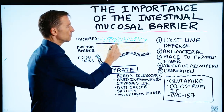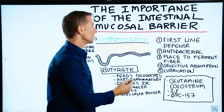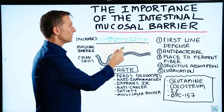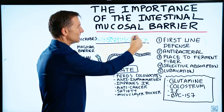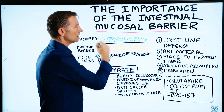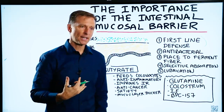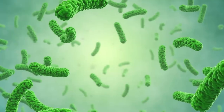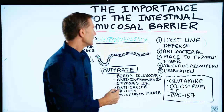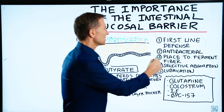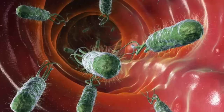This mucosal barrier is the first line of defense. The body is trying to protect itself from pathogens and also from these microbes getting into the body. We want to keep these microbes out here so they can ferment fiber, because our bodies cannot break down fiber — we get help from our friendly microbes. This mucosal barrier is also antibacterial, so it repels bacteria.